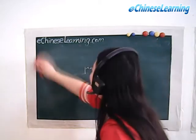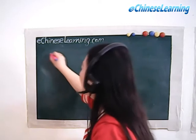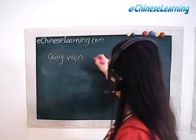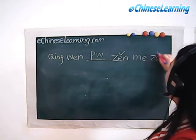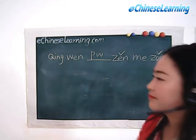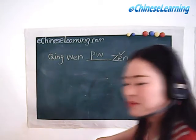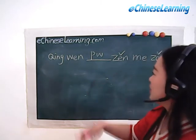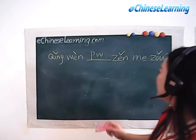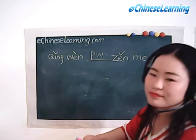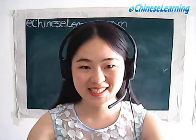Let's continue. The full sentence is: 'qing wen' — some place — 'zen me zou.' In order for every conversation, you can put 'ni hao' at the front of every sentence. So it becomes: 'ni hao, qing wen' — place word — 'zen me zou.' You can insert any place here, such as Beijing or Shanghai. The full sentence is: 'qing wen' — some place — 'zen me zou.' Very good — that's all for today's lesson!